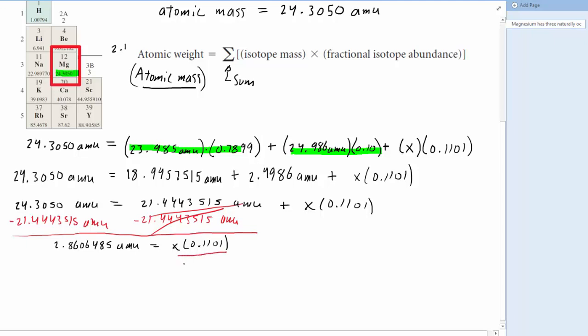And then finally, if we divide both sides of this equation by 0.1101, we're going to be left with x, which was the atomic mass of the third isotope, and indeed will be the correct answer. So we have 25.9822752 AMU as equaling x.